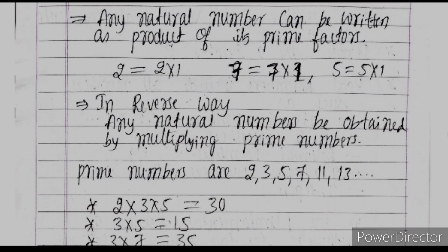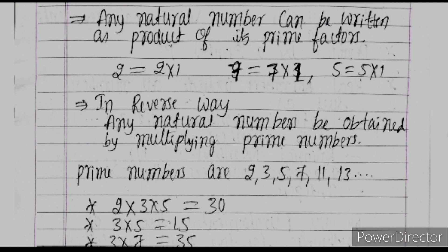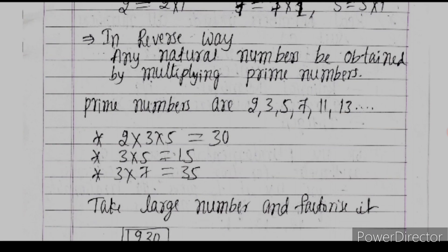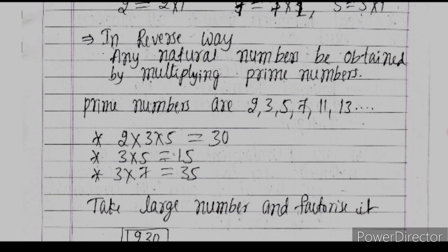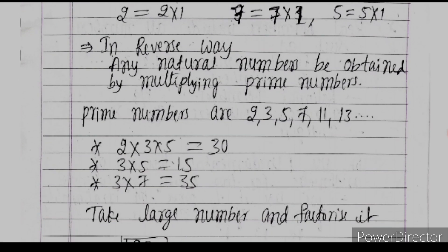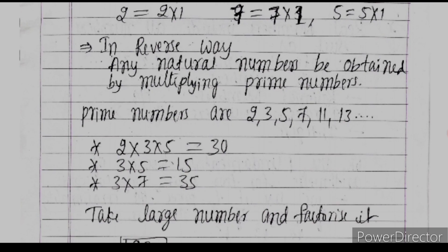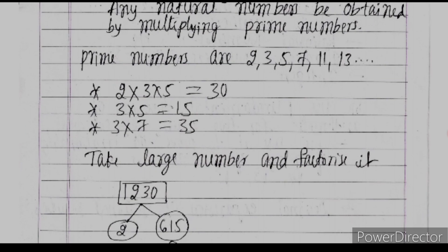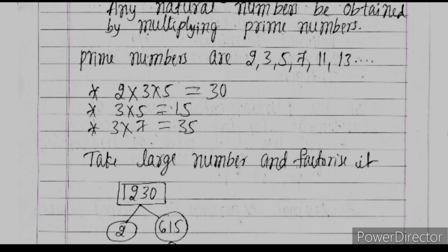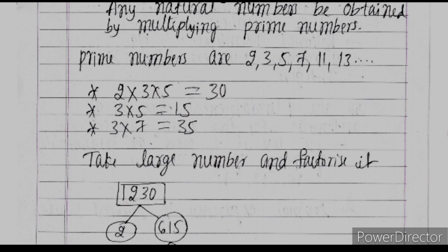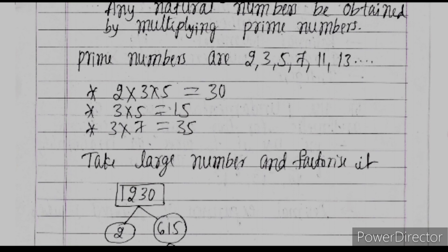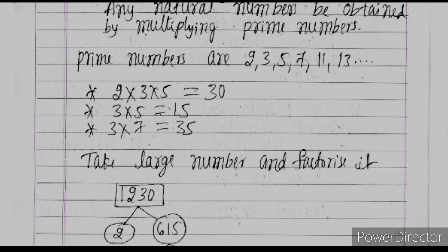Any natural number can be written as a product of its prime factors. In reverse, any natural number can be obtained by multiplying prime numbers. For example, 2 × 3 × 5 = 30 — here we multiplied three prime numbers and got the natural number 30. Similarly, 3 × 5 = 15, and 3 × 7 = 21.